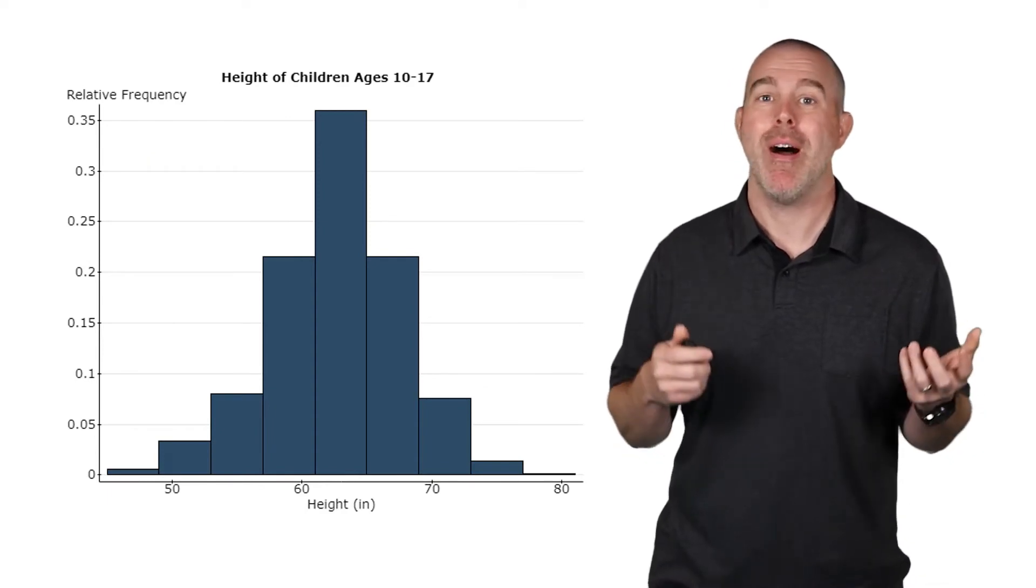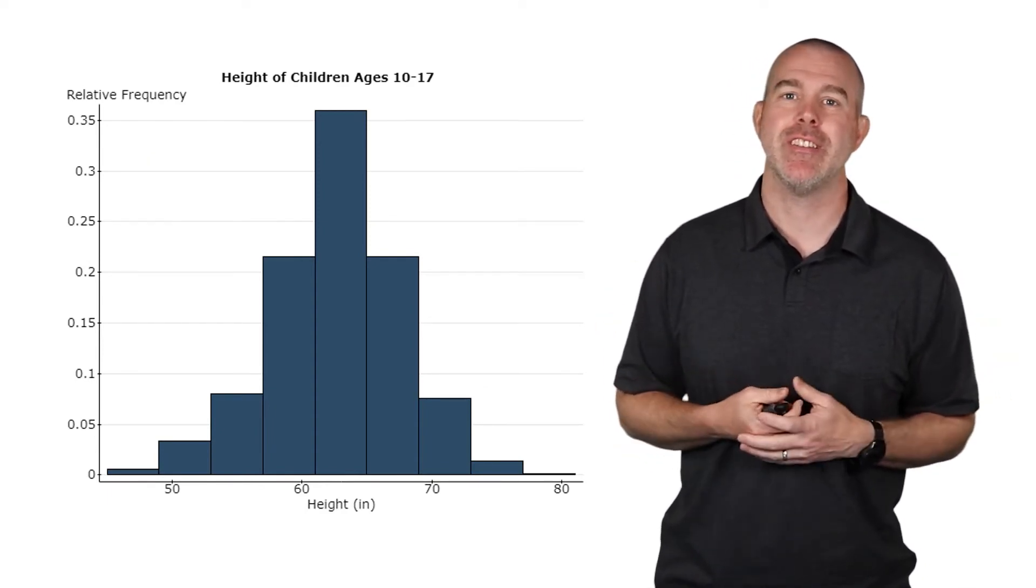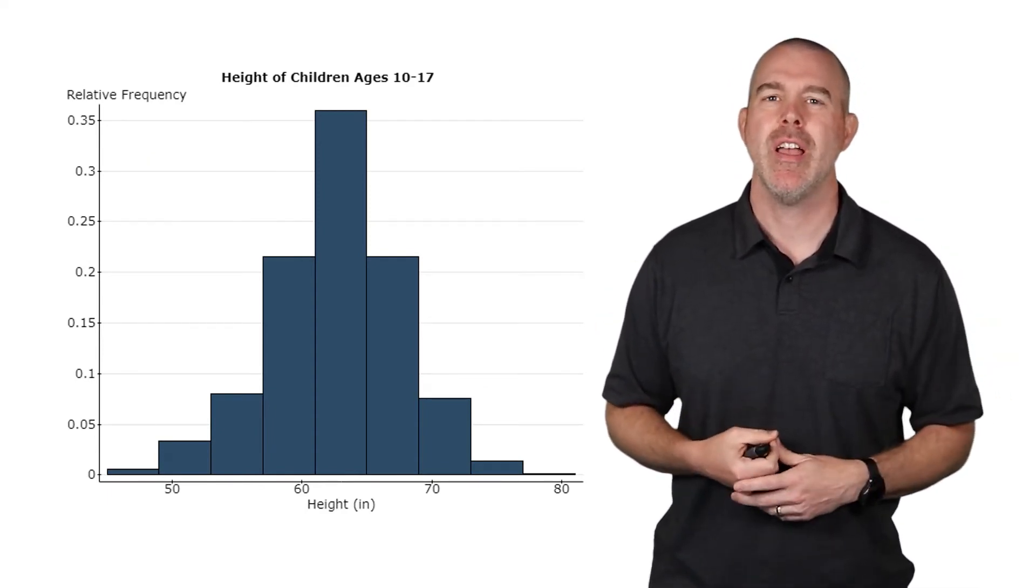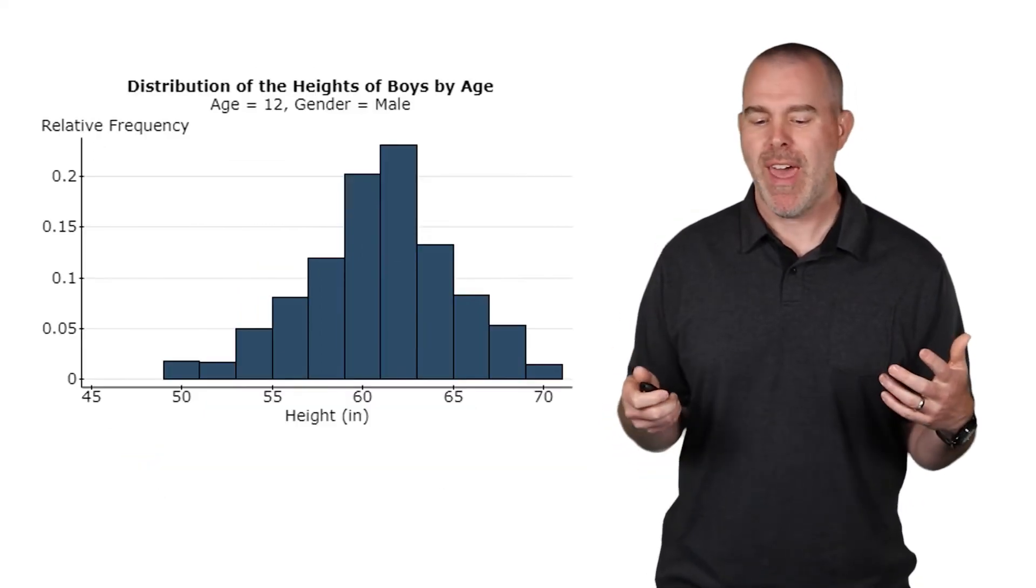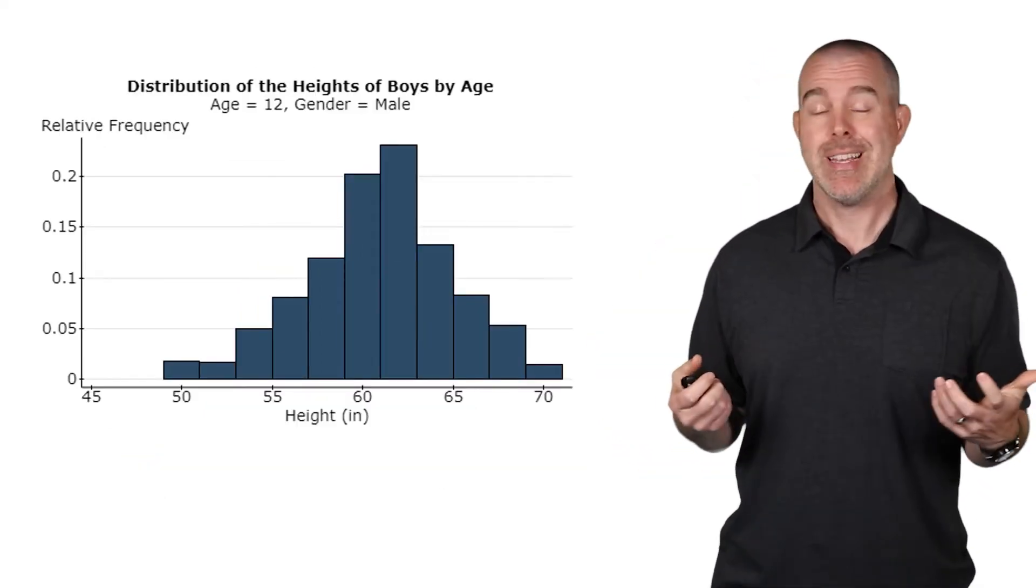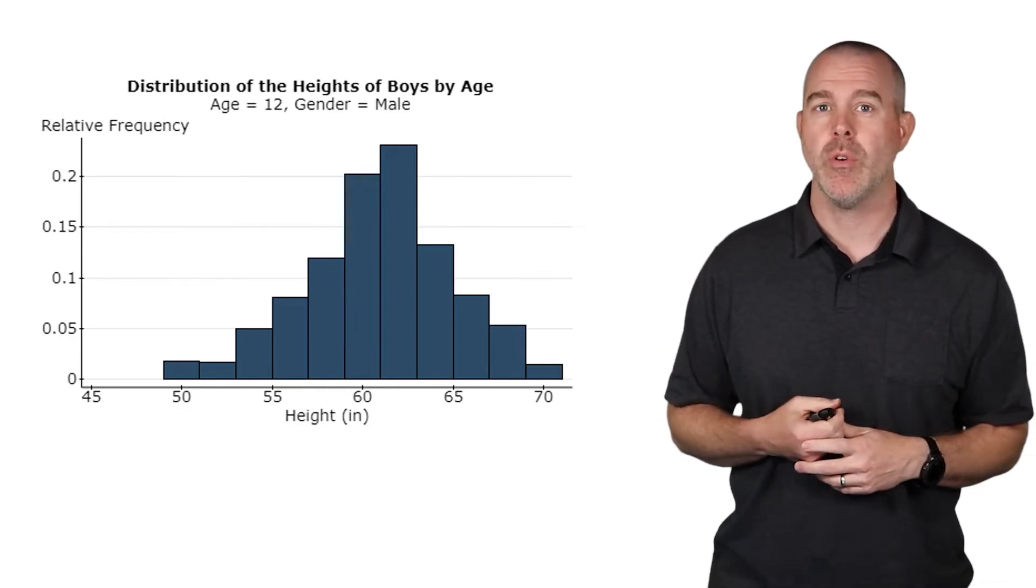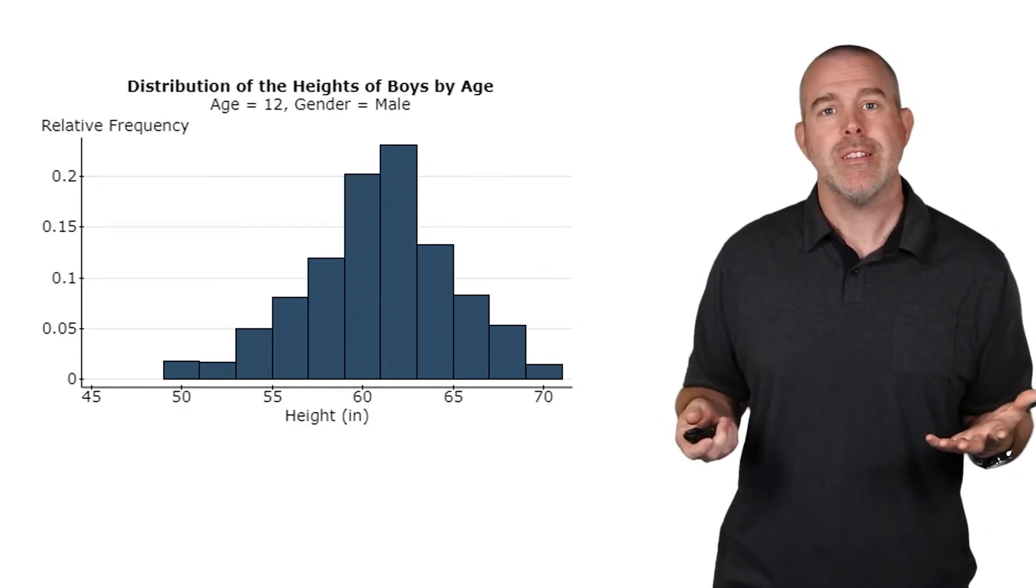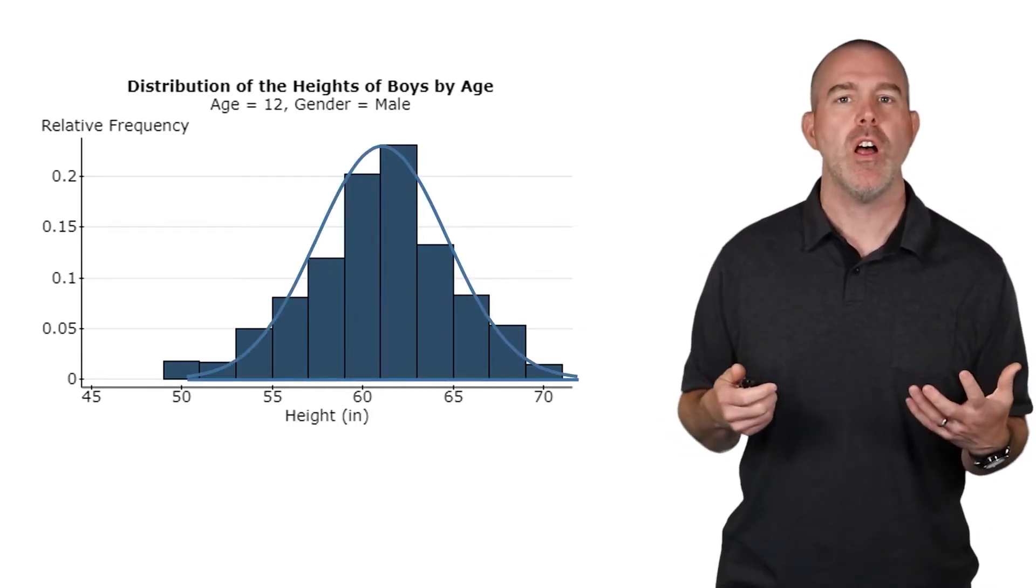We did previously talk about heights. We had heights of children ages 10 to 12. This was in our health behaviors of school-aged children. Let's look, in fact, at 12-year-old males. At the time of filming this video, I actually have a 12-year-old son. So this is pretty symmetric. It's not perfect, but if we draw a normal curve, it fits pretty close.